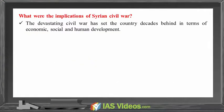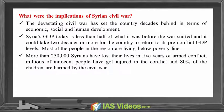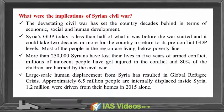What were the implications of the Syrian civil war? The devastating civil war has set the country decades behind in terms of economic, social and human development. Syria's GDP today is less than half of what it was before the war, and it could take two decades or more to return to pre-conflict GDP levels. Most people in the region are living below the poverty line. More than 250,000 Syrians have lost their lives in five years of armed conflict, millions have been injured, and 80% of children are harmed by the civil war. Large-scale displacement has resulted in a global refugee crisis, with approximately 6.5 million people internally displaced inside Syria, and 1.2 million driven from their homes in 2015 alone.